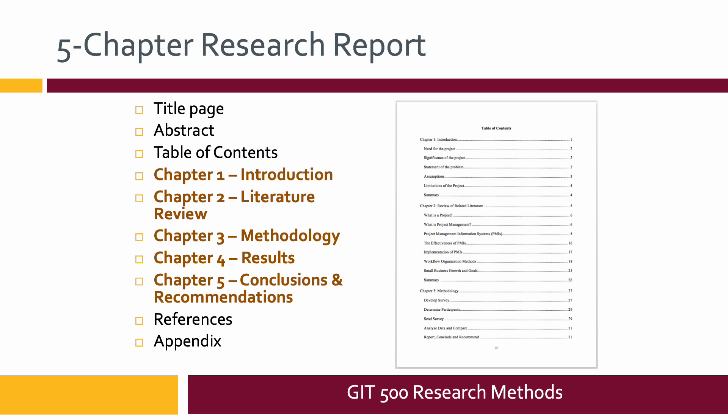Here is what goes into a five-chapter research report. We're going to be going through this one by one, particularly the items in brown. It starts with a title page that has a specific format — not too worried about that for this class — and an abstract, which is like an executive summary of what happened in the study. Then you'll have a table of contents, the five chapters, and after those a references page for all your sources.